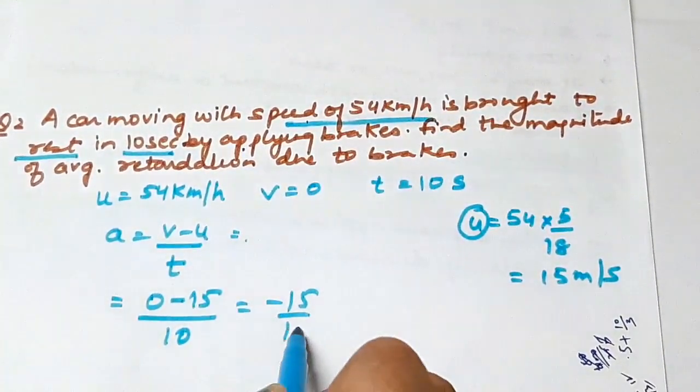If an object is moving with constant or uniform velocity, its acceleration is zero. One more concept is retardation.